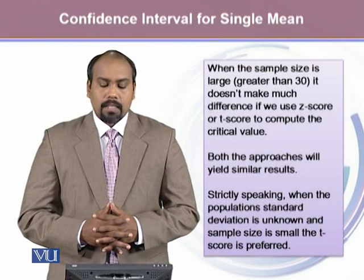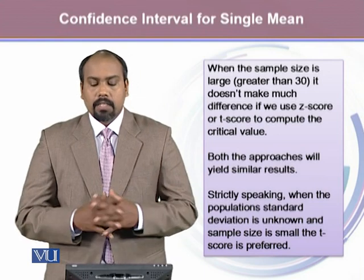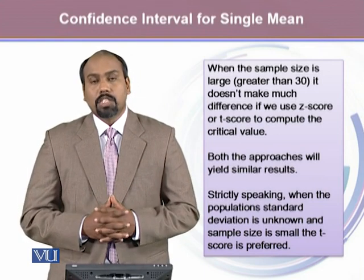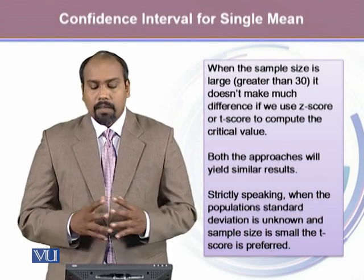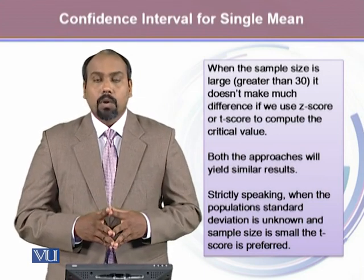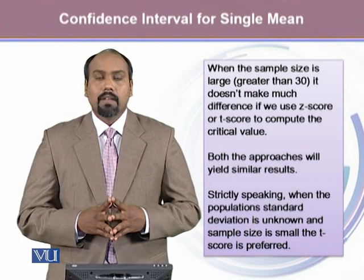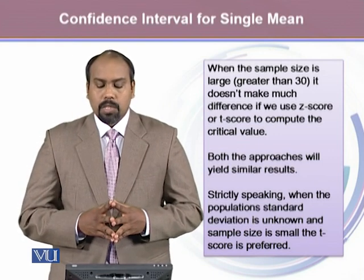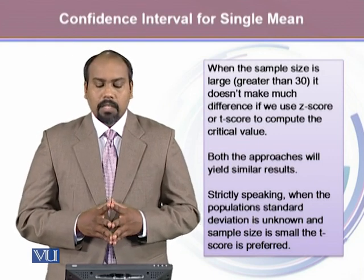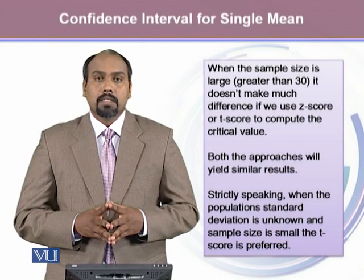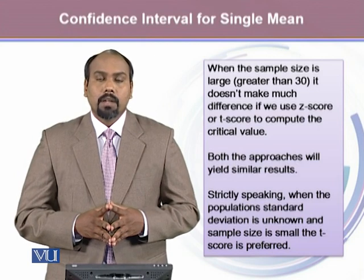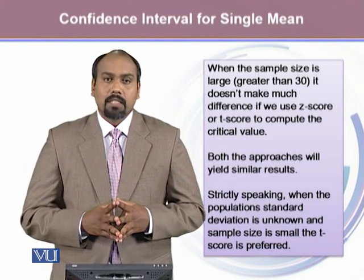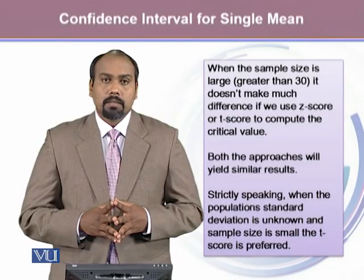When the sample size is large, greater than 30, it does not make much difference if we use the z-score or t-score to compute the critical value. Both approaches will yield similar results, but the t distribution will give us better results.